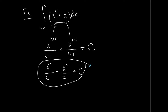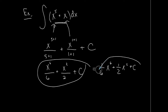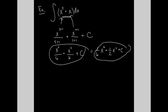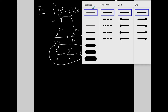Simplified, that's x to the sixth over 6 plus x squared over 2 plus c. You might also see this written as 1/6 x to the sixth plus 1/2 x squared — they're both the same function, just showing the fraction in front.